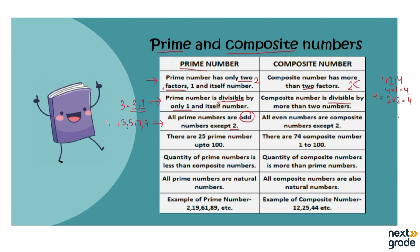When we talk about prime numbers specifically, we talk about numbers that are divisible only by one or by themselves. So the prime numbers are two, three, five, seven. But nine is not a prime number. Why? Because nine can be divided by more than two factors: one, three, and nine.